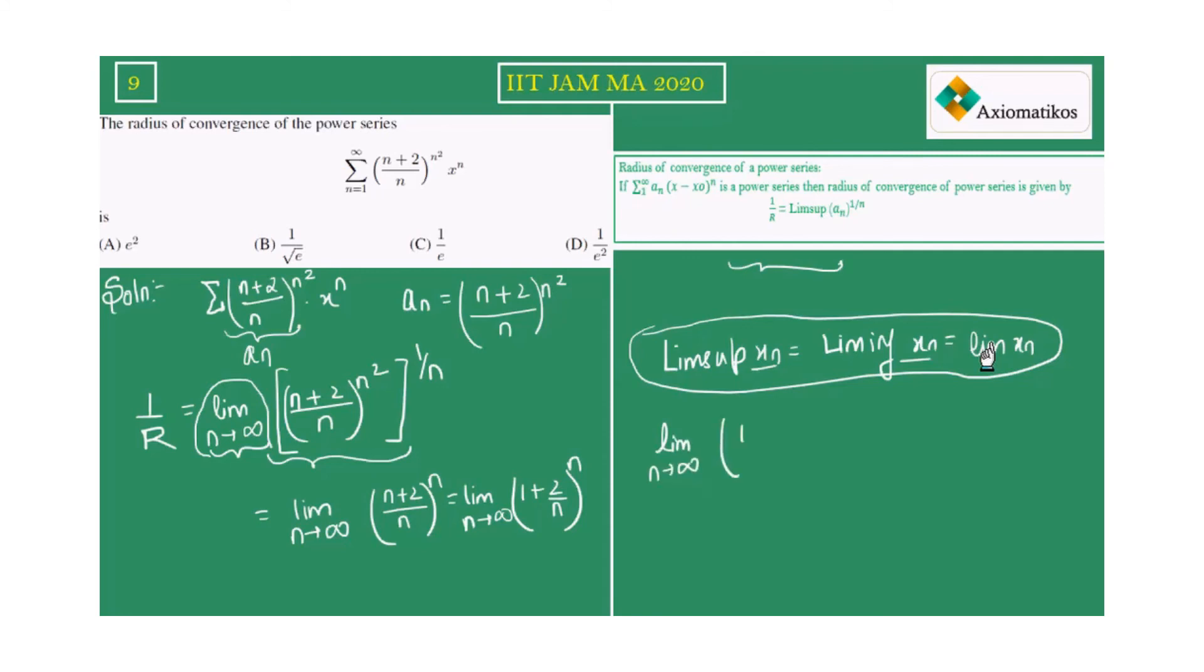Suppose we have a limit like this, then it has a form like this. From here, you are getting e², you will get e² as your answer.